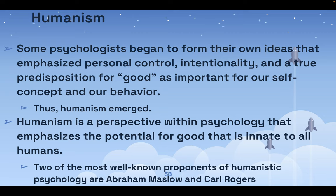Some psychologists began forming their own ideas emphasizing personal control, intentionality, and a true predisposition for good — important for self-concept and behavior. From the concept that people are actually good and it's society that is bad came humanism. Humanism is a perspective within psychology that emphasizes the potential for good that is innate to all humans — the idea that if you leave somebody alone and society doesn't interfere, that individual will become a good person.